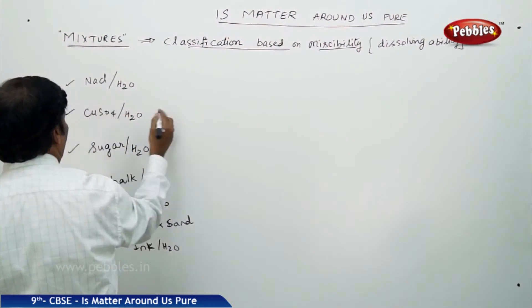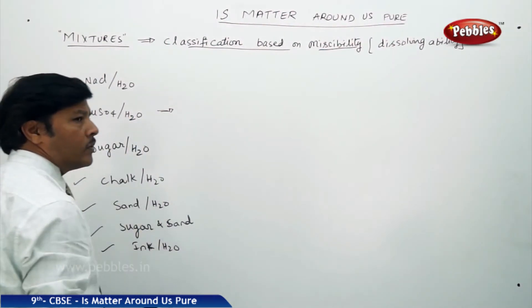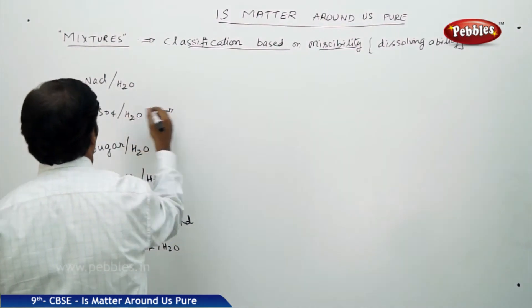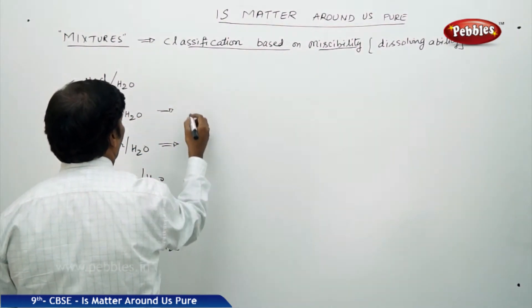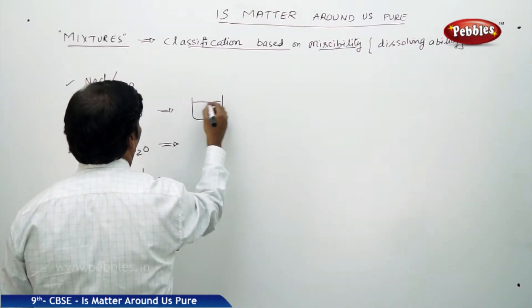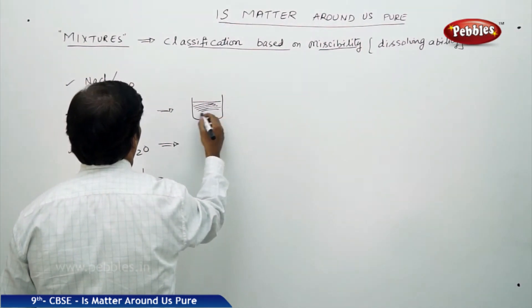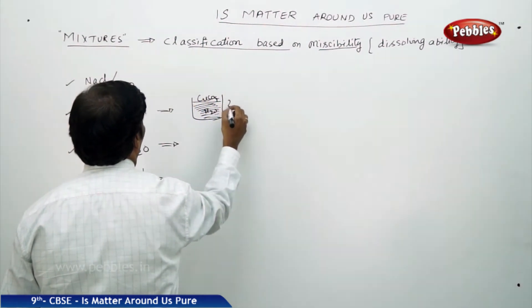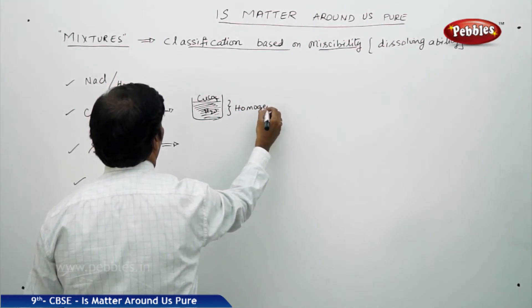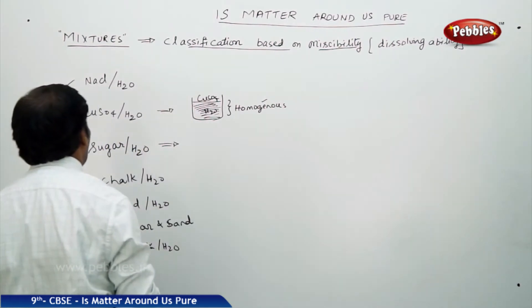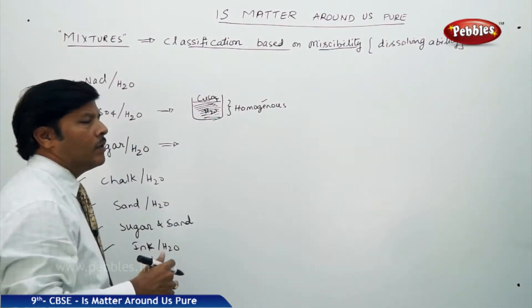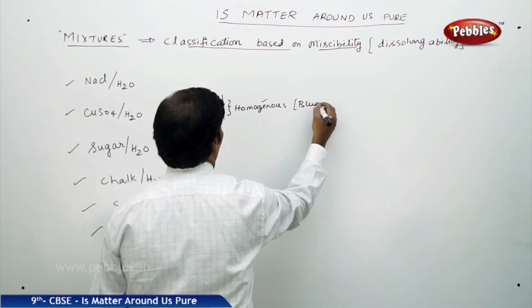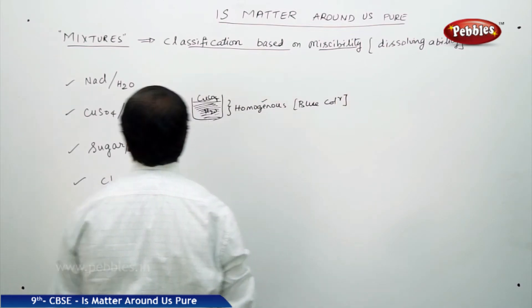If you take copper sulphate in water — CuSO4 is copper sulphate — copper sulphate completely dissolves in water and you find that the solution is homogeneous. If you take a container and observe it, you find that the solution is quite homogeneous. Copper sulphate with water is completely homogeneous. You can see there is a blue colour. It becomes homogeneous.